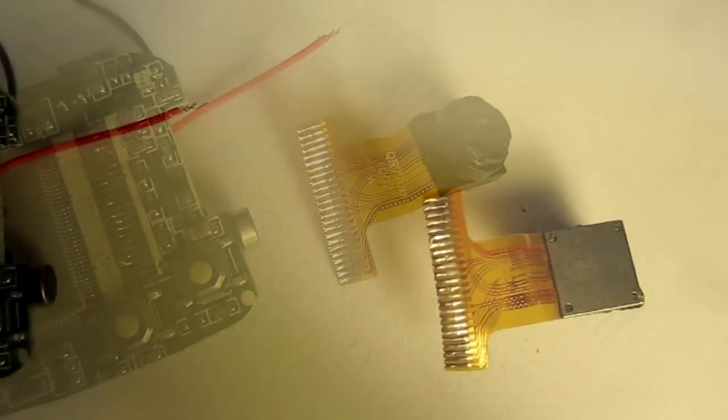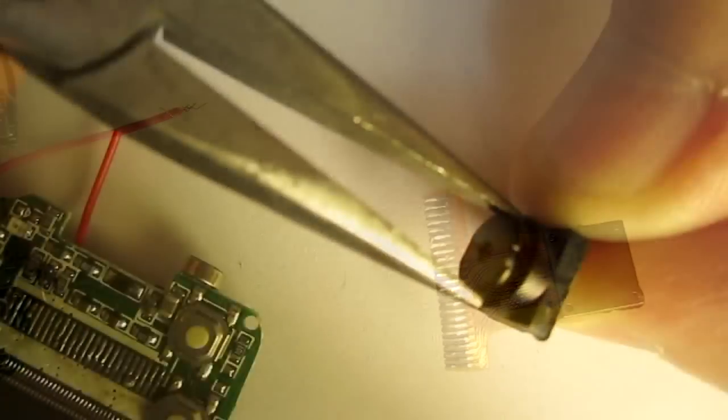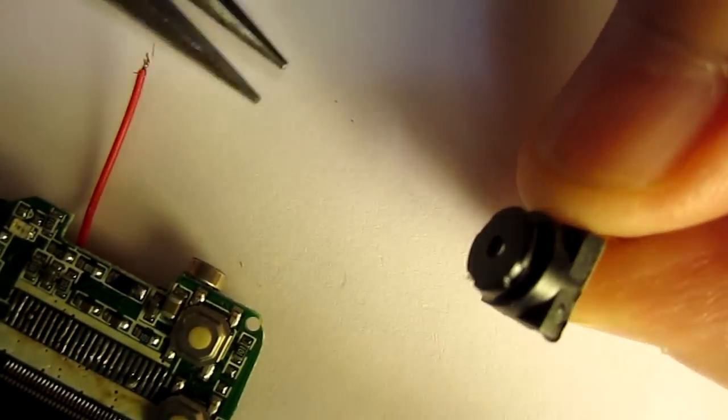There is the camera module, sometimes called a CCM, compact camera module. I'm unscrewing the lens assembly from the camera body.